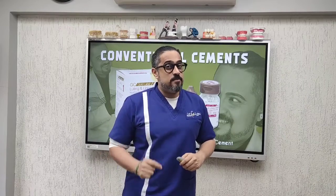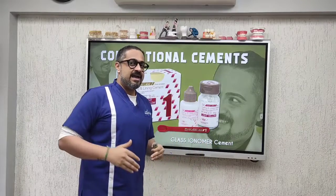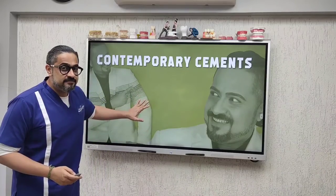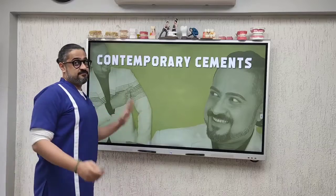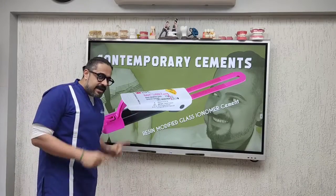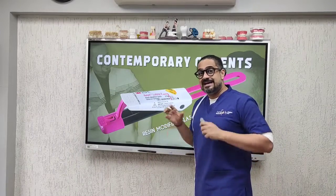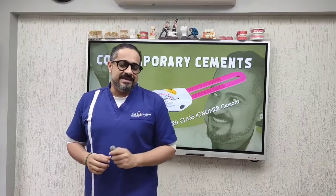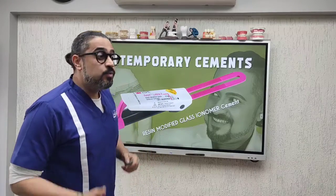But we realize there are drawbacks to this material as well, which is the reason why we've gone a step ahead. We now have more contemporary resins available, and I'm putting up on screen my personal favorite cement — RMGIC, resin modified glass ionomer cement — present in the form of a clicker. It overcomes the drawbacks of GIC by bringing resin into the mix.